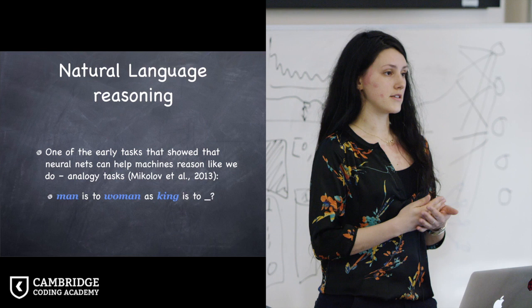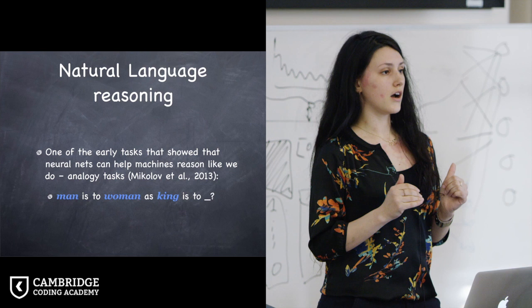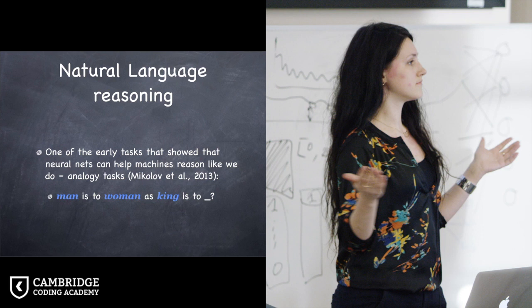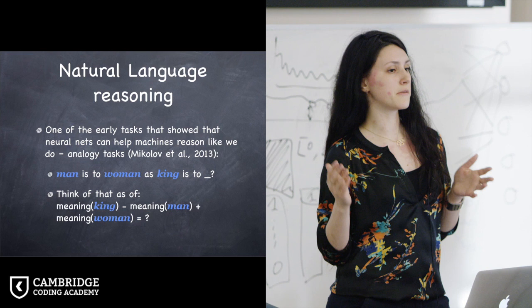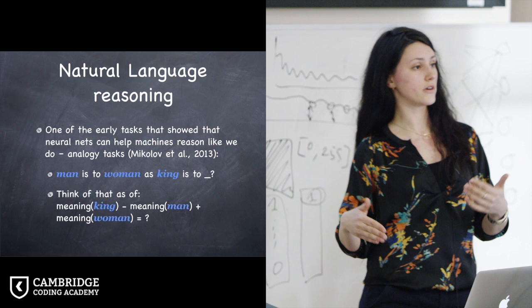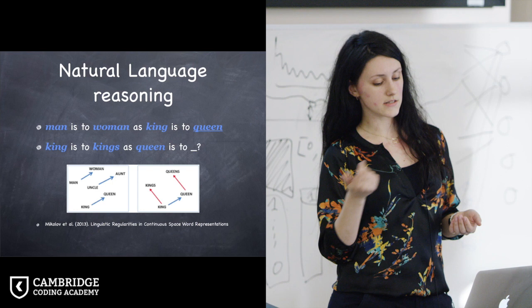So they looked at the analogy task. They asked, if man is in some relation to woman, in terms of words, then what would be the words that king is in the similar relation to? Any takers? Queen. We can basically reason about that in terms of the meaning of a word king, minus the meaning of a word man, plus the meaning of a word woman. And that way we can derive the word queen. In the same way, we can basically move from the word king to kings and the word queen to queens.